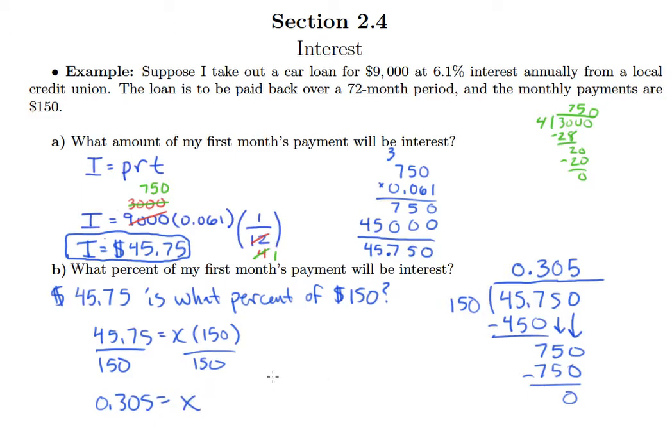So that means that 30.5% of the first month's payment is interest.